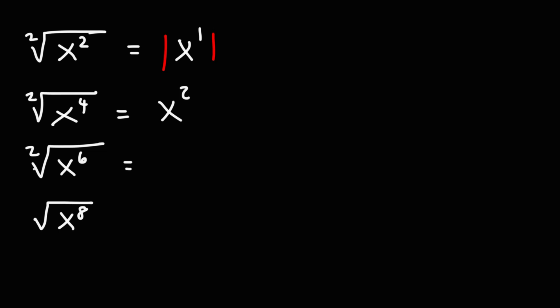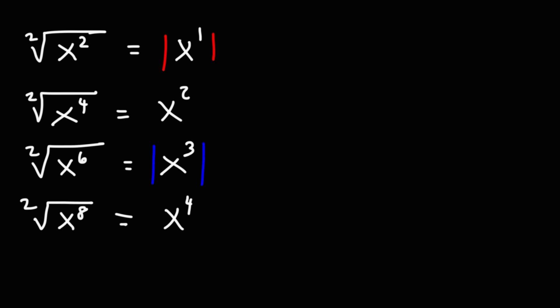Now for the next one, we have the square root of x to the sixth. Six divided by two is three. Since we have an odd exponent as the result, we need to use the absolute value symbol — so this is going to be the absolute value of x cubed. For the last one, eight divided by two is four. Since we have an even exponent as a result, we do not need to use the absolute value symbol.